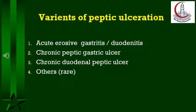There are three variants of peptic ulceration. The first is acute erosive gastritis, duodenitis, or gastroduodenitis, where there are multiple erosions in the mucosa of the stomach and duodenum. Stress ulcers are types of acute peptic ulceration and include Curling's ulcer, which is stress ulceration occurring in patients with major burns.